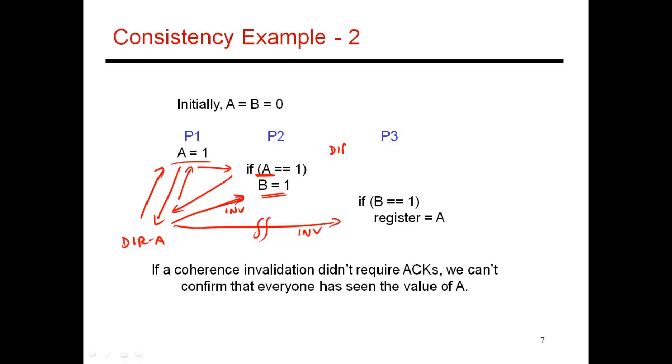Then it goes ahead and performs B equals 1. Here's the directory for B. Tells the directory. The directory sends an invalidation. Let's say that this reaches here really quickly. Then when P3 tries to do a read of B, it sees that it has an invalid copy, goes to the directory, gets the latest copy from P2, sees that B is 1, and then it does a read of A.